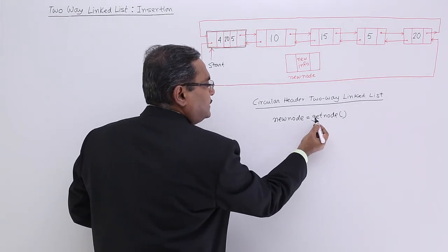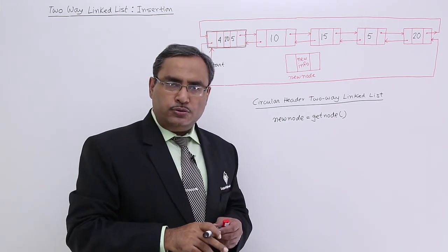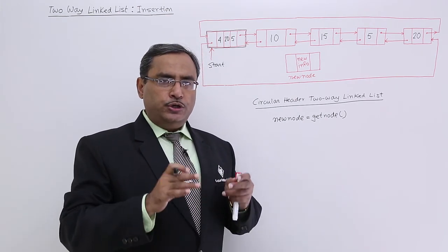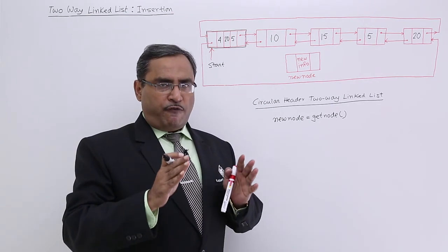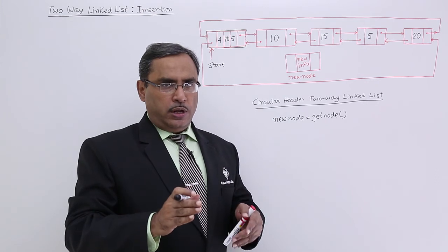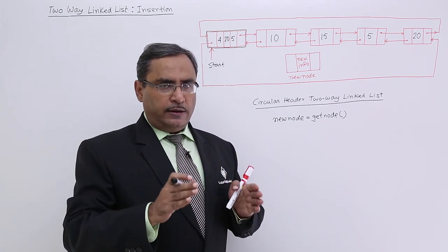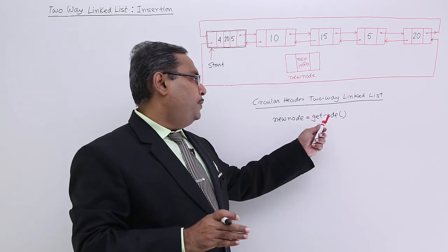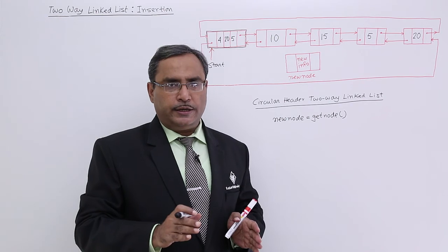To insert a new node, we write: new node is equal to getNode. In earlier cases also, we considered this function getNode which will do some memory space allocation depending upon the format of the node, the record structure of the node. The memory space allocation will be done and the starting reference of that particular memory block will be assigned to this new node. So now new node has got created.